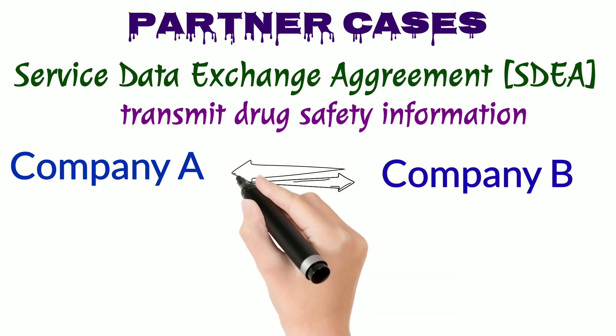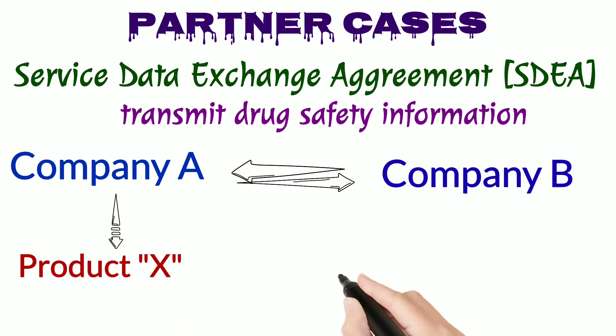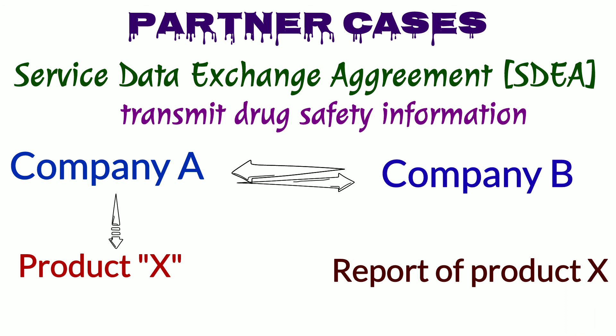For example, suppose company A and company B are in a contractual agreement, and company A manufactures product X. If a physician reports an adverse event related to product X to company B, then it is mandatory for company B to share this adverse event information with company A. However, if company A and B are not in a contractual agreement, then company B is not under obligation to share the adverse event of product X to company A. However, company B may share the information with the regulatory authority, and the regulatory authority may then pass this information to company A.